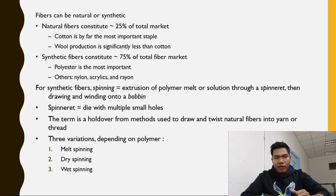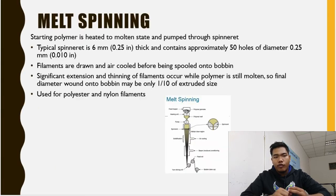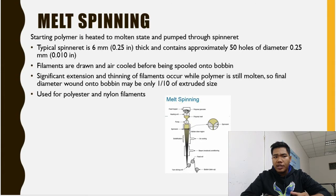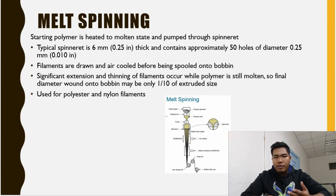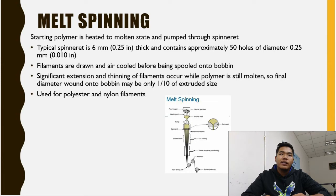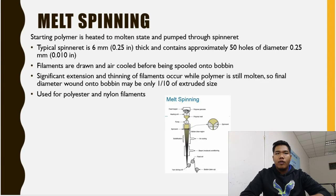There are three spinning variations depending on the polymer. The first is melt spinning, where the starting polymer is heated to a molten state and pumped to the spinneret. A typical spinneret is 6 mm thick and contains approximately 50 holes of about 0.25 mm diameter. Filaments are drawn and air-cooled before being spooled onto a bobbin. This allows extension of the filaments while the polymer is still molten, and is used for polyester and nylon filaments.